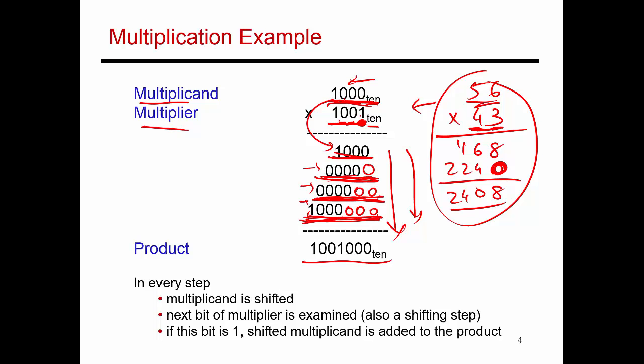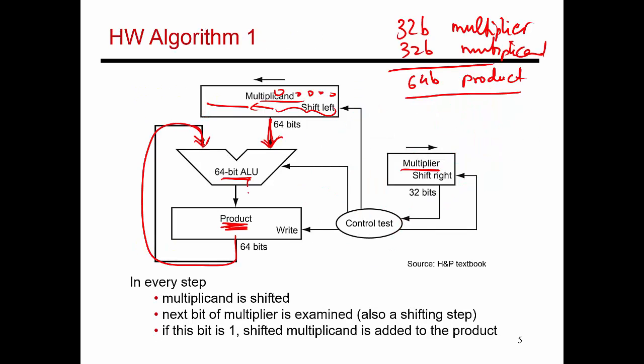And depending on whether that least significant bit was a one or a zero, you add the sum and write it in here, or you just ignore that sum.